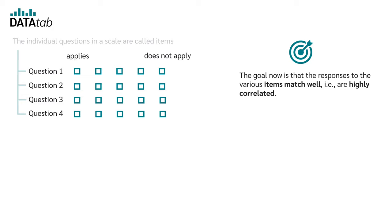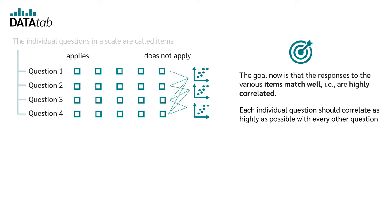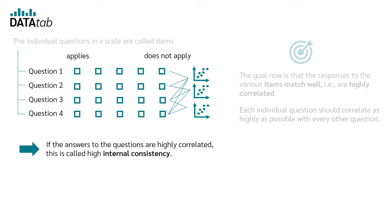The goal now is that the responses to the various items match well. So, for example, they should be highly correlated. Each individual question should correlate as highly as possible with every other question. If the answers to the questions are highly correlated, this is called a high internal consistency.